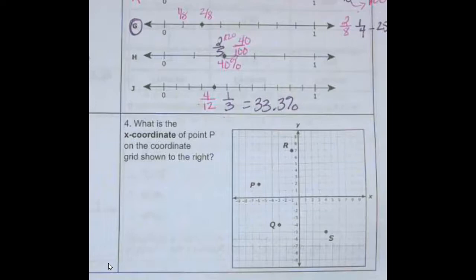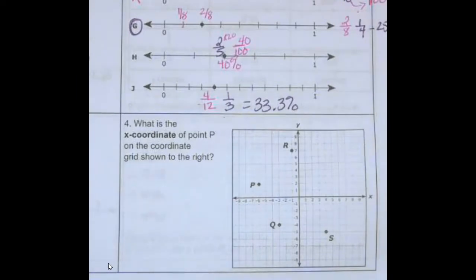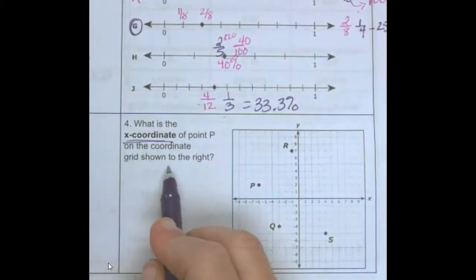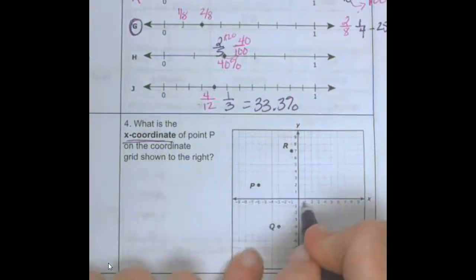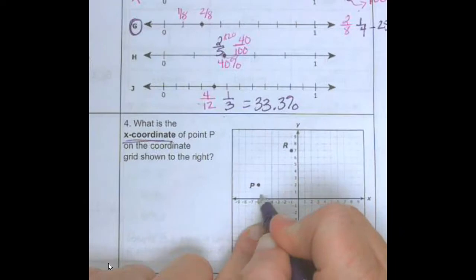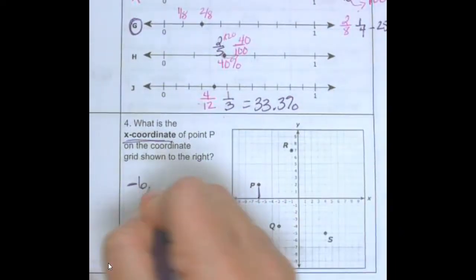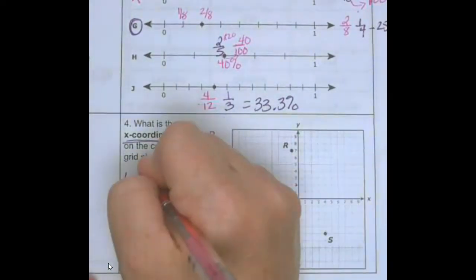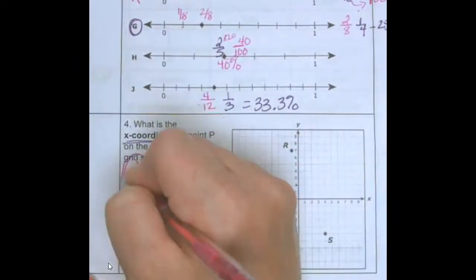Number four — I'm going to give you a big hint. This is like a question that was on your CBA that several people missed, not because they didn't know it but because they didn't read carefully. What is the X coordinate of point P on the coordinate grid shown? Here's P: one, two, three, four, five, six — so negative six. The coordinate pair is (negative six, two). X is negative six, Y is two.